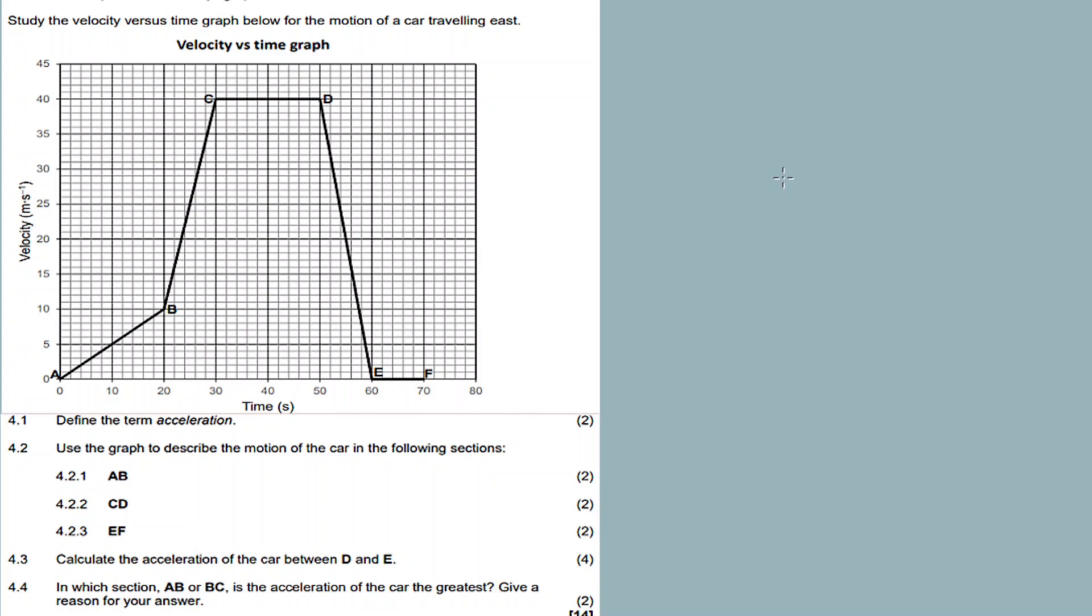In this question, we have questions on this velocity-time graph. I've put links in the description box for other questions and the question paper. They say study the velocity versus time graph below for the motion of a car traveling east. It's traveling east - east, north, south, west - it's traveling east.